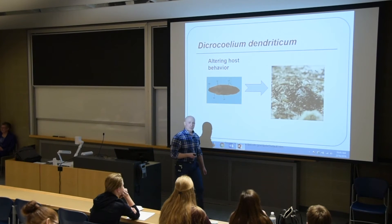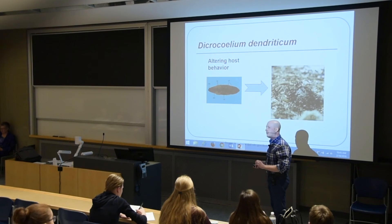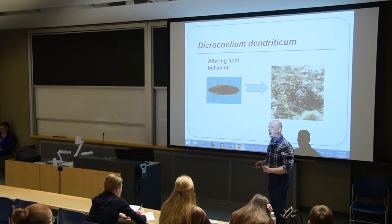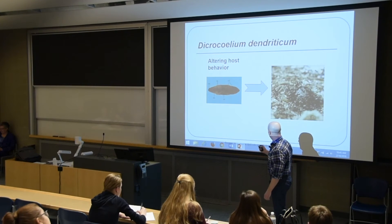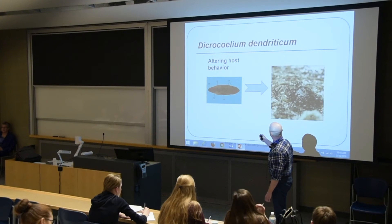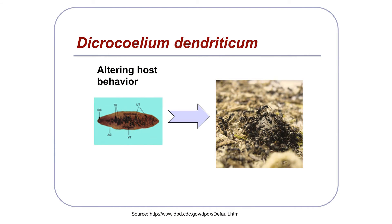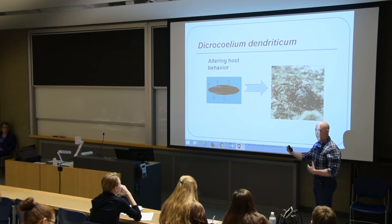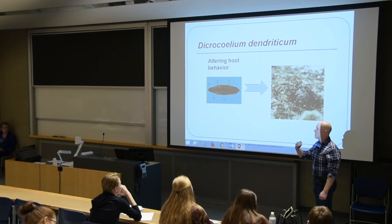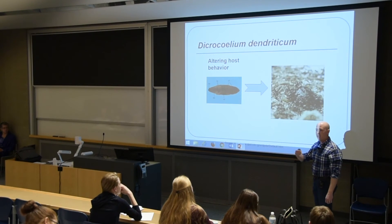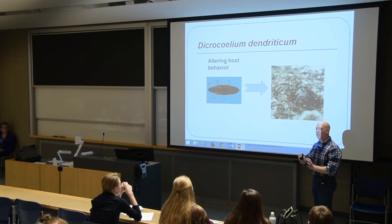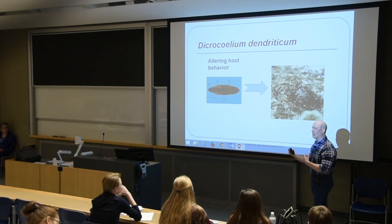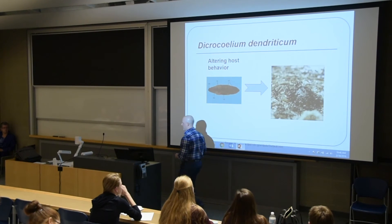Another interesting aspect is that there are a few examples of parasites that are able to alter the behavior of their host. A really good example is Dicrocoelium dendriticum. The larval stage affects an intermediate host — the ant — making its way to the ant's brain and causing the ant to climb onto blades of grass or other vegetation. This makes the ants more exposed to being eaten by cows and other warm-blooded animals, essentially forcing the ant into the final host by altering the behavior of the intermediate host.